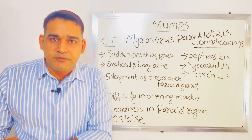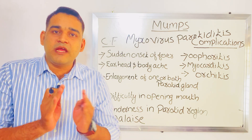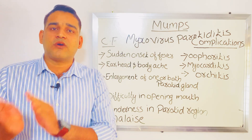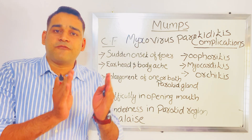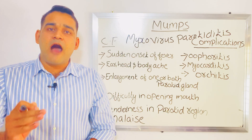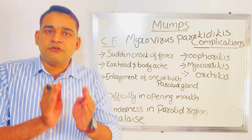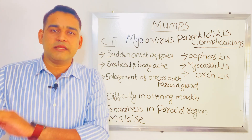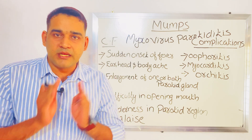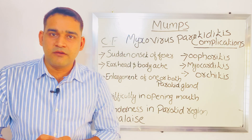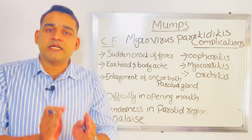The period of communicability is four to six days before the onset of signs and symptoms, as well as one week or thereafter after the occurrence of signs and symptoms.